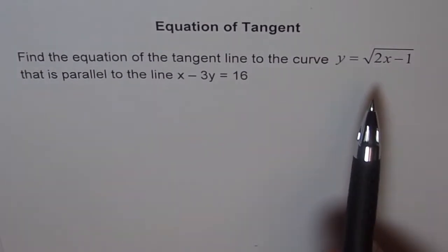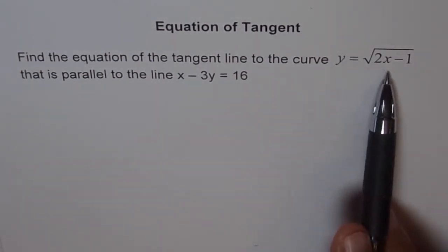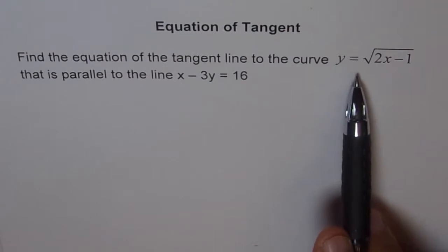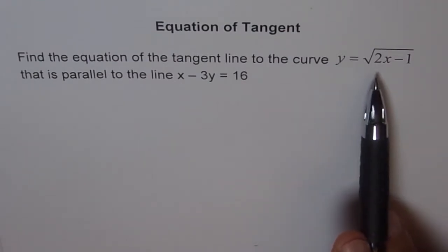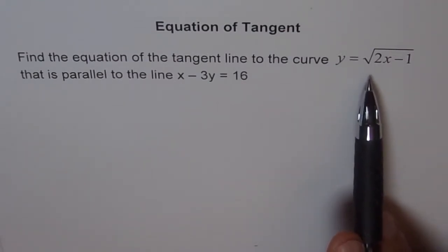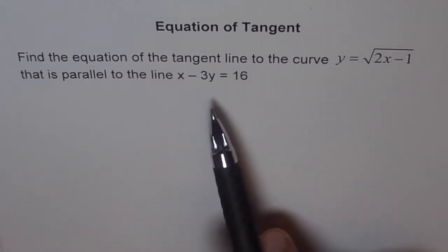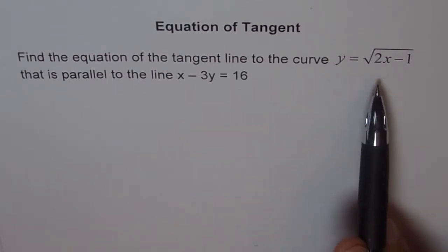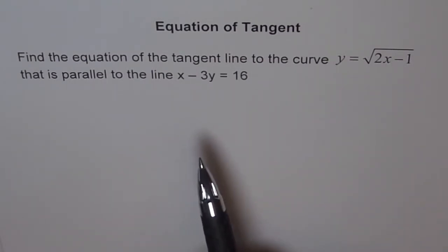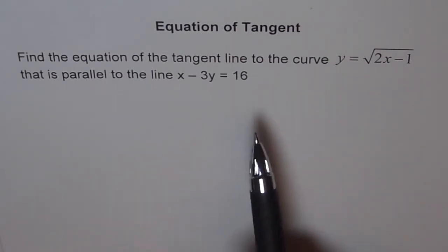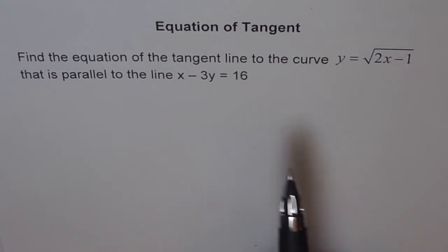From here we can use the first principle to find the slope of the curve, equate that slope to 1 over 3, and find the point at which the slope will be 1 over 3. That is the strategy we are going to use.